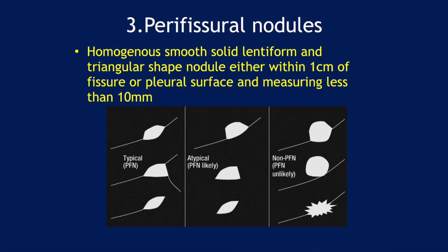Third is peripheral nodules. Peripheral nodules are definitely benign. What are they? They are homogeneous, smooth, solid, lentiform and triangular shaped nodules, either within one centimeter of a fissure or pleural surface, and measuring less than 10 millimeters. These are the typical peripheral nodules.